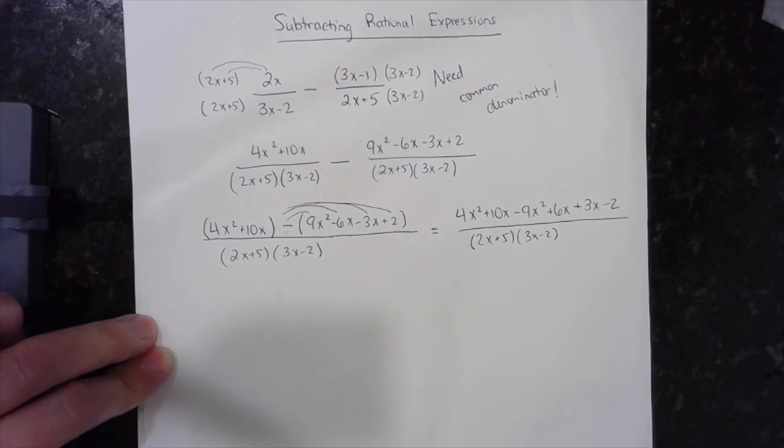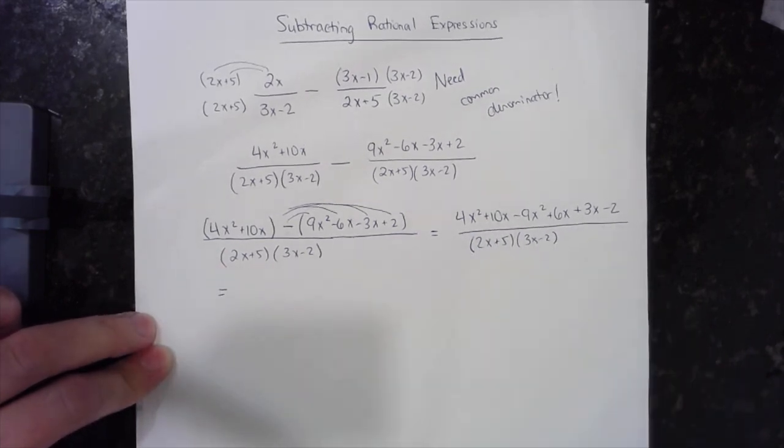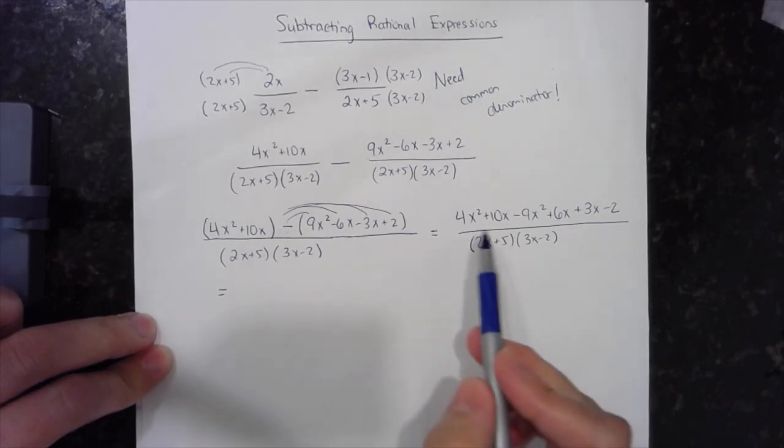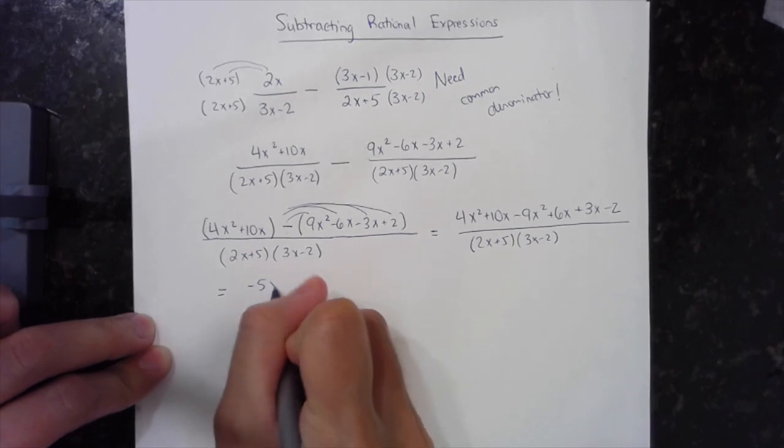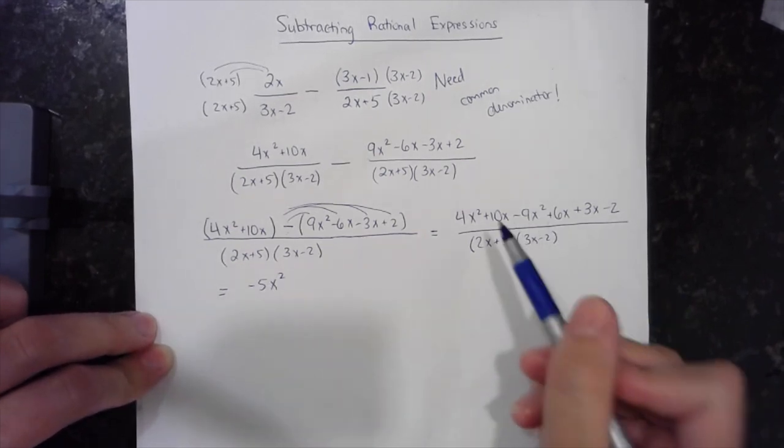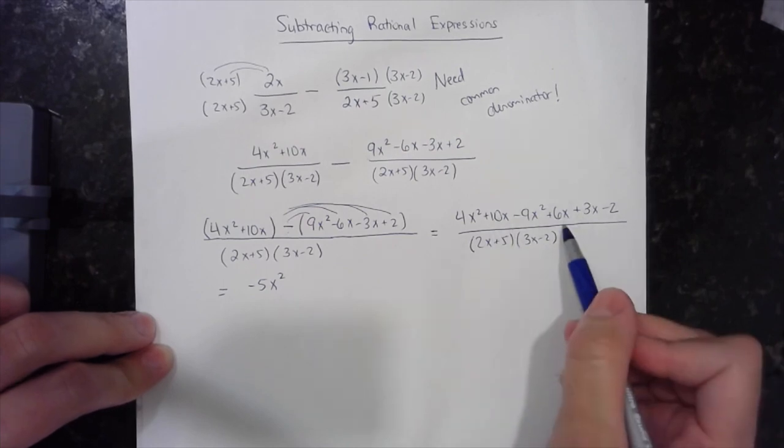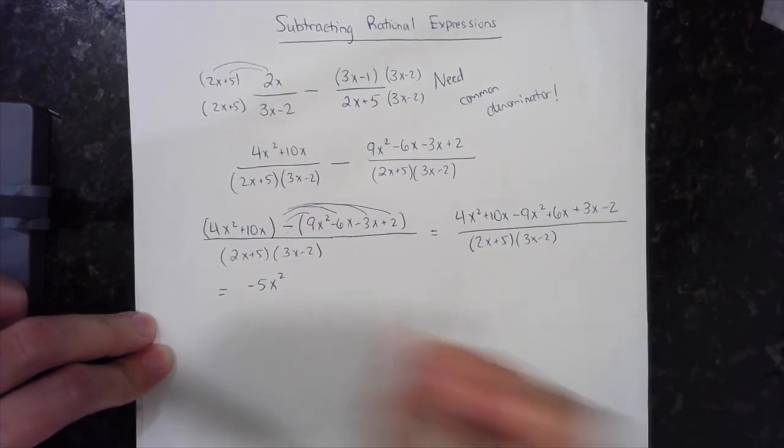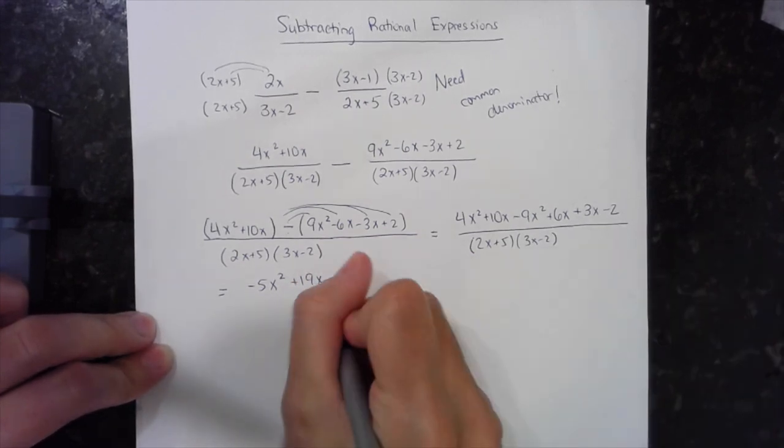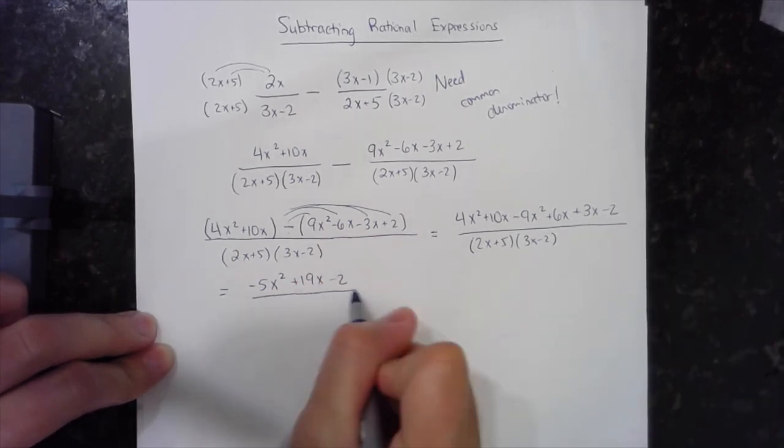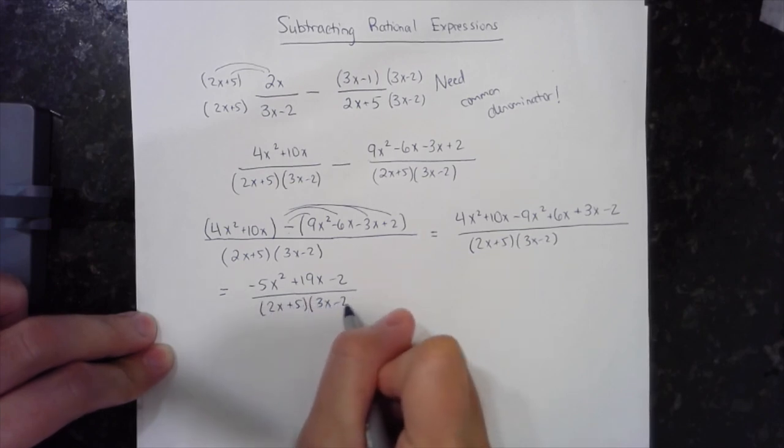Now I'm almost done, all I need to do is to combine like terms and simplify if I can. So I have my x squared term, so I have a 4x squared minus a 9x squared, which is a negative 5x squared. And I have 3x terms, so I have a 10x plus a 6x, which is 16x, plus a 3x, which is a positive 19x. And then this minus 2 all by its lonesome, all over a 2x plus 5 times a 3x minus 2.